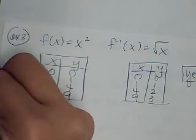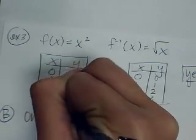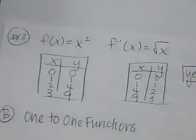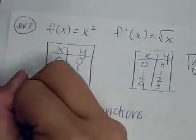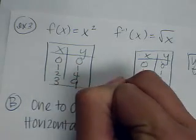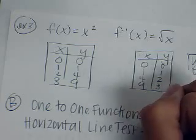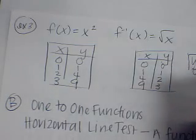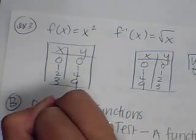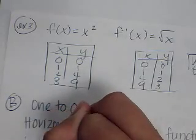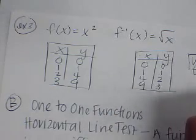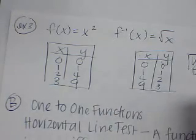Finally, the last thing we talked about today, part B, was one-to-one functions. And one-to-one functions just passed the horizontal line test. Meaning, a function has an inverse if and only if no horizontal line intersects the graph.